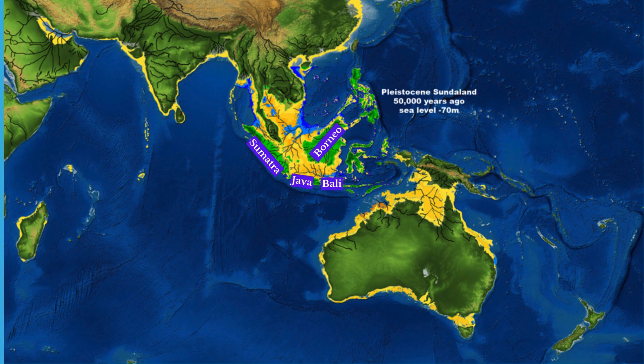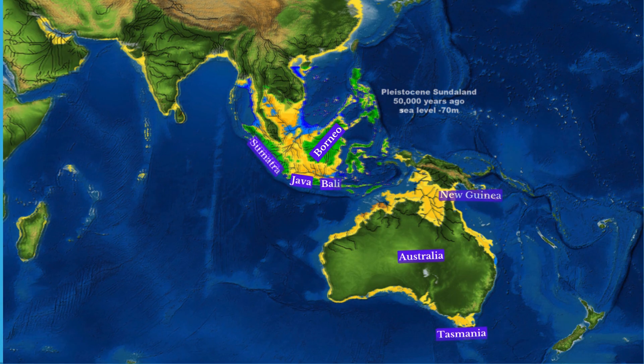Substantial land bridges linked this landmass during the last glacial maximum around 20,000 years ago. Over time, Sundaland experienced sea-level rises resulting in a 120-meter increase that shaped the present-day geographical layout of Southeast Asia. Sahul comprised regions like Australia, New Guinea, and Tasmania, connected during the last glacial maximum due to lower sea levels.